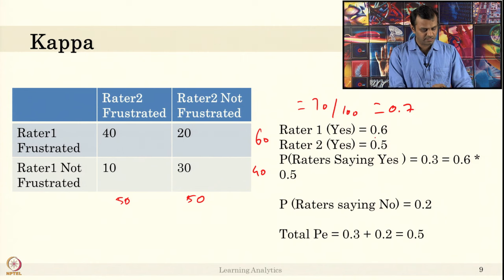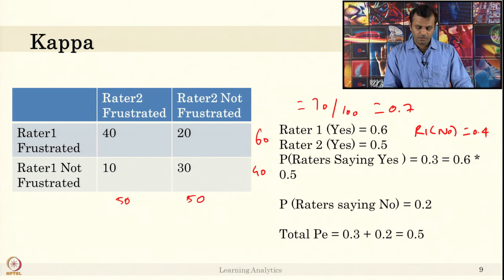Rater 1 says 60 percent of time yes and rater 1 says yes for 40 percent of time, that is rater 1 saying no is 0.4. What it says is that rater 1 has a bias of telling yes more compared to no, which means when you see a small slight expression in the face, it might mark it as frustrated. That is the rater 1 bias. In rater 2 it is equally biased. For example, it says 0.5 percent of time, say 0.5 probability, rater 2 says students are frustrated. Another 0.5 probability, that is rater 2 says students are not frustrated.